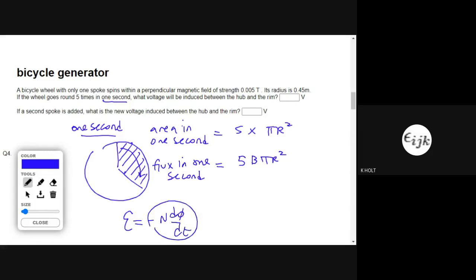Of flux linkage. We've only got one coil. The EMF is the rate of change of flux, so this thing here equals the EMF. So I need to plug that in: five times B times pi times r squared.